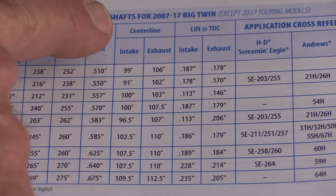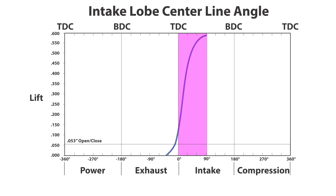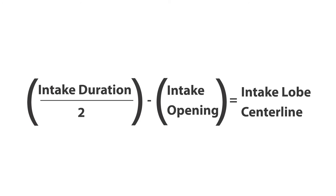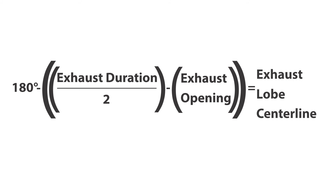Lobe centerline angle and lobe separation angle are two somewhat less common specifications that sometimes appear in cam spec charts. For the intake valve, the lobe centerline angle is defined as the degrees of crank rotation between top dead center on the intake stroke and the point when the intake valve reaches its maximum lift — expressed in degrees after top dead center. You can calculate intake lobe centerline angle by dividing the intake duration by two and subtracting the intake opening time in degrees before top dead center. Exhaust lobe centerline angle is defined as the degrees of crank rotation between the point where the exhaust valve reaches maximum lift and TDC on the exhaust stroke. It can be calculated by dividing the exhaust duration by two, subtracting the exhaust opening time, and subtracting the result from 180 degrees. Exhaust lobe centerline is expressed in degrees before top dead center.